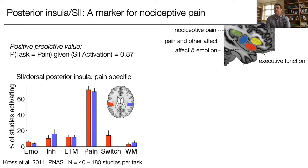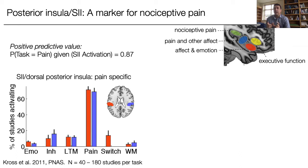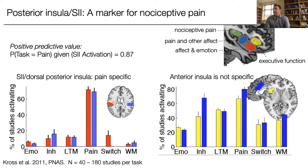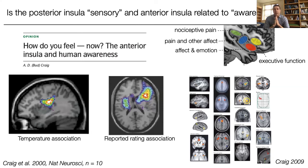This early hand-coded meta-analytic work suggests there is quite a bit of specificity in the posterior insula including S2 for pain. Looking across a series of meta-analytic databases — emotion, cognitive inhibition, long-term memory, pain, shifting attention, and working memory — we can calculate the positive predictive value: if we activate the S2 and posterior insula areas, what's the probability it's a pain task? The positive predictive value is nearly 90%. But the anterior insula is not specific at all, nor is the dorsal anterior cingulate — these respond broadly across all of these different manipulations.